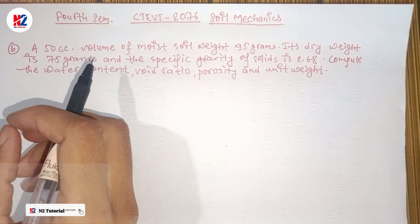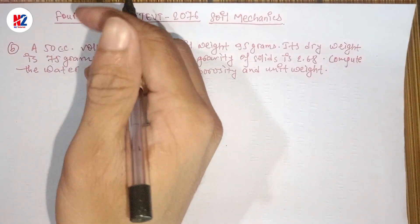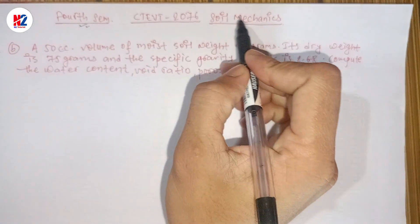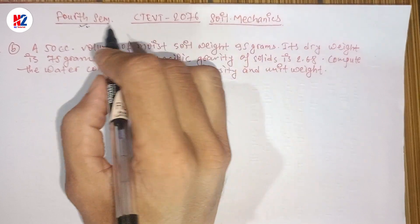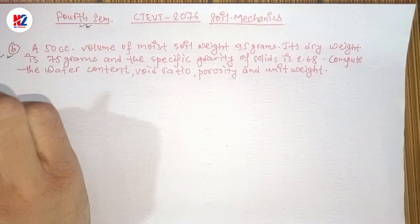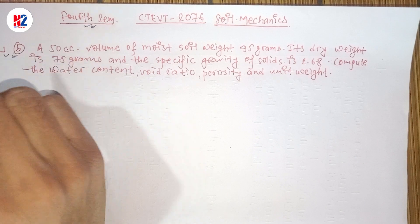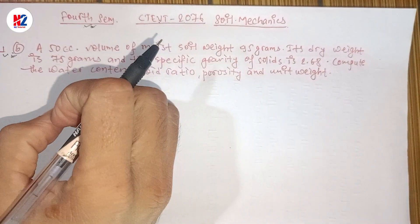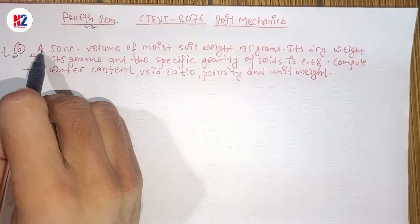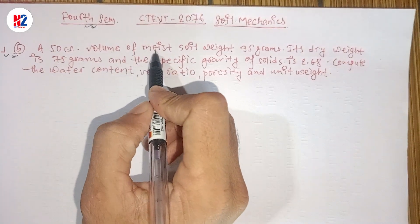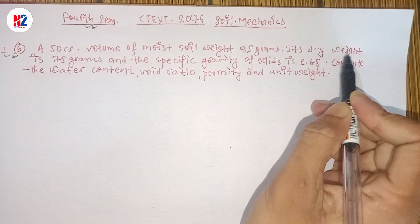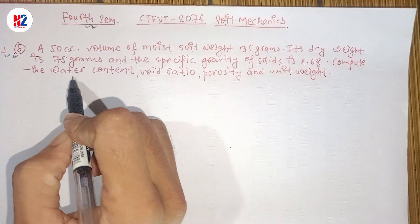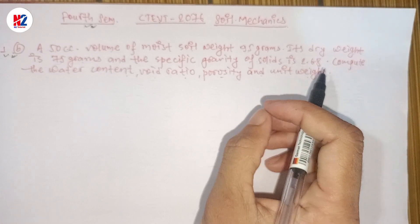Hello everyone, welcome back to our YouTube channel. This tutorial is for diploma in civil engineering students. We have some material questions on soil mechanics. The problem: a 50 cc volume of moist soil weighs 95 grams, its dry weight is 75 grams, and the specific gravity of solids is 2.68. Compute the water content, void ratio, porosity, and unit weight.